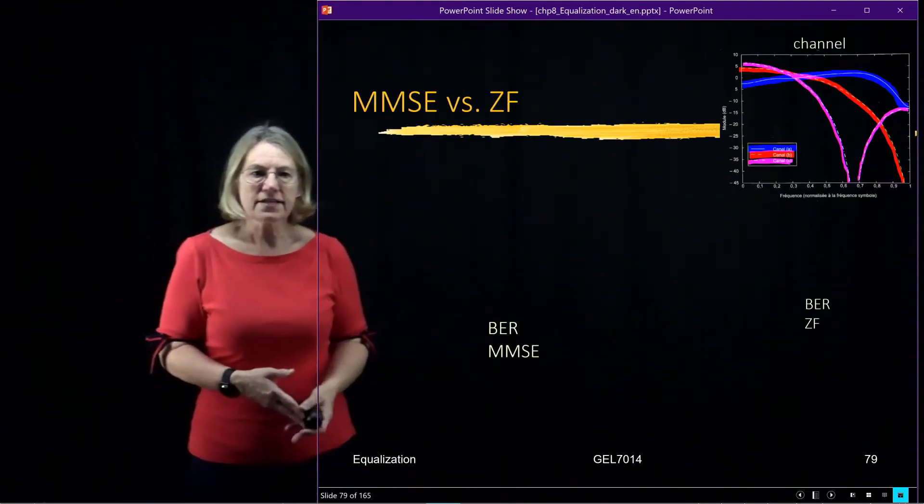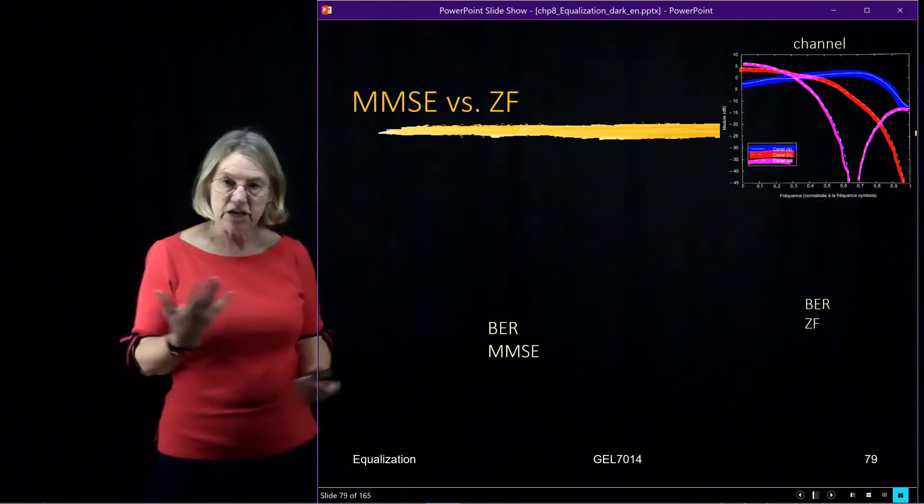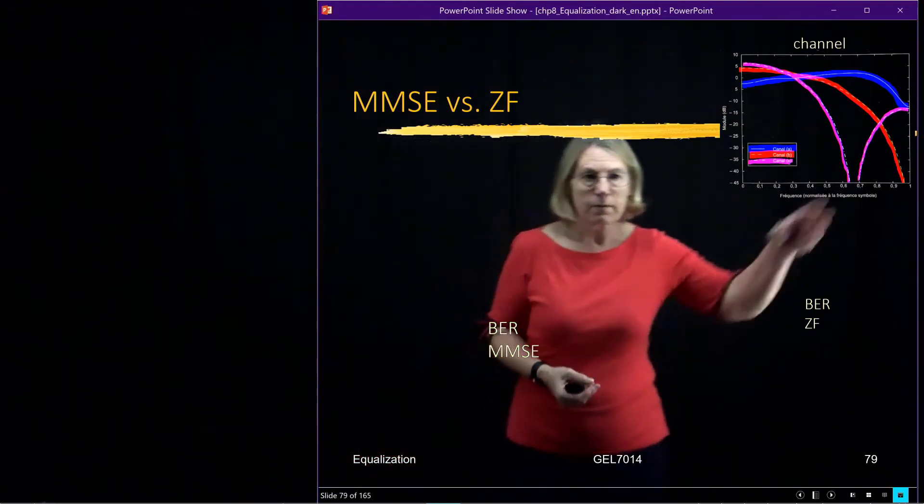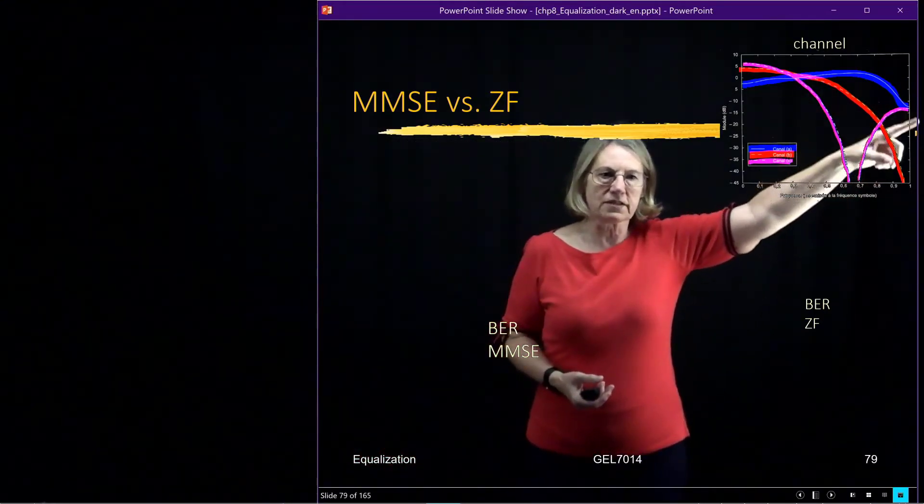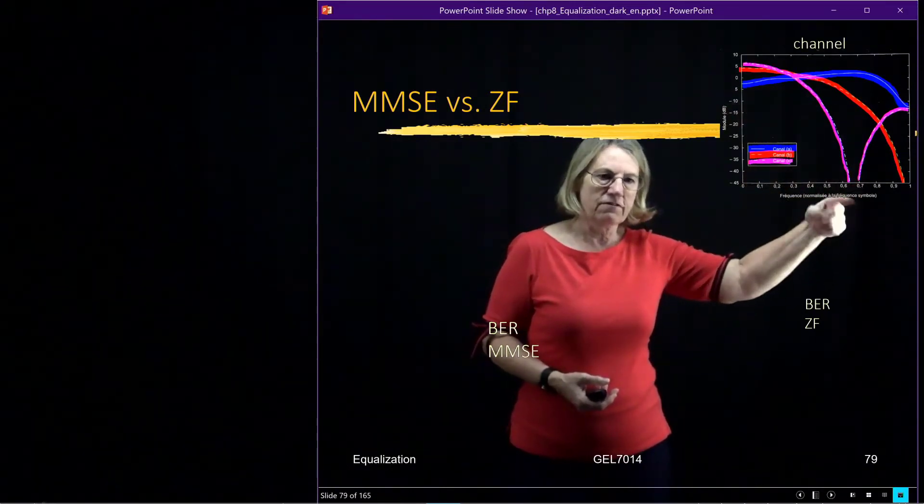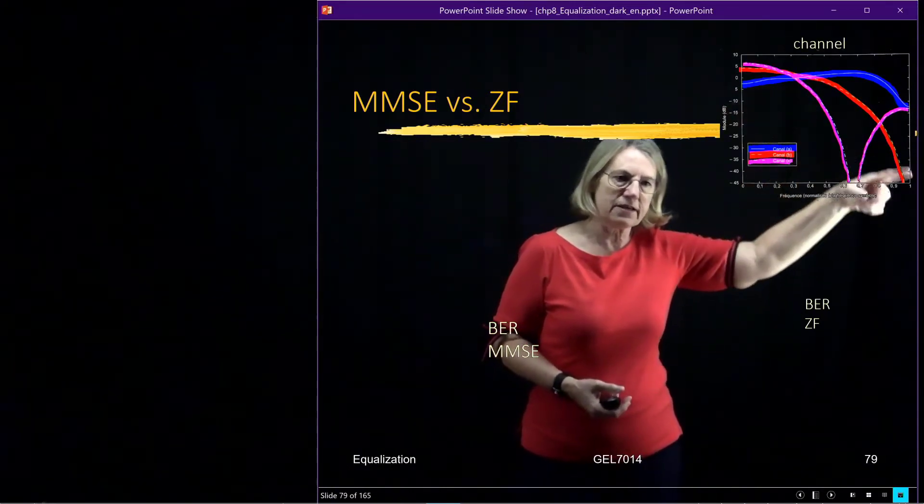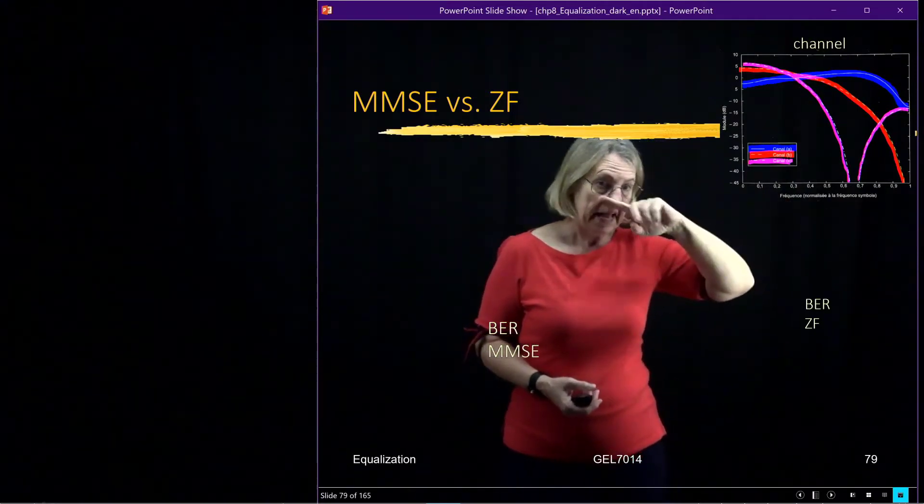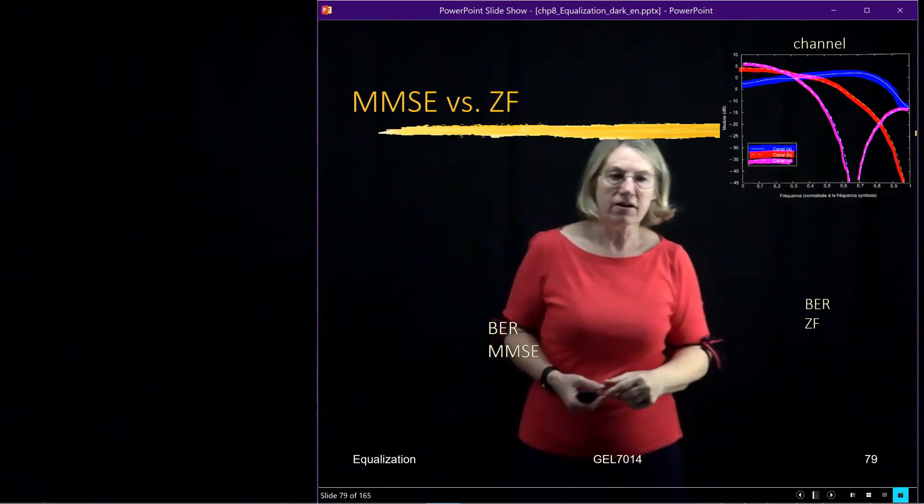So as I said, we're going to look at the same channels that we looked at previously for the zero-forcing. Remember, there were three different ones. The blue one's a little bit more benign, and the pink one has a fade at lower frequencies, and we can see a slow roll-off fading, and the red at higher frequencies.